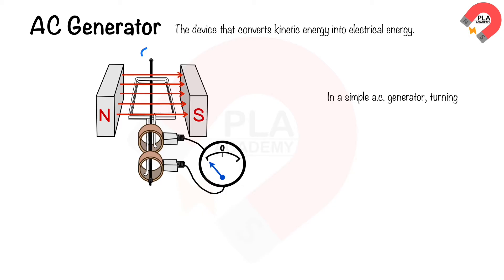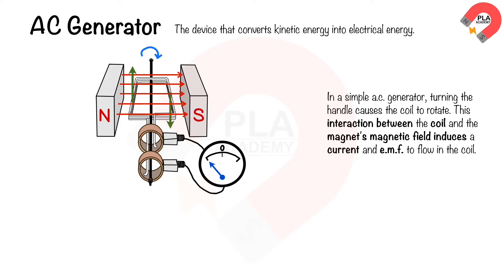In a simple AC generator, turning the handle causes the coil to rotate. This interaction between the coil and the magnet's magnetic field induces a current, an EMF, to flow in the coil.